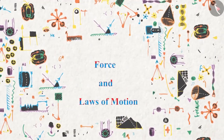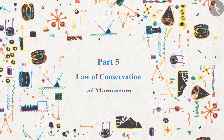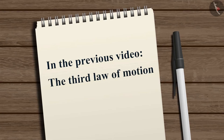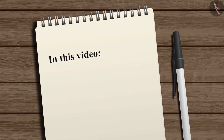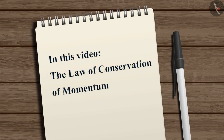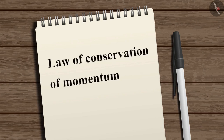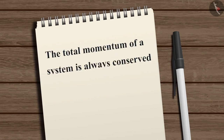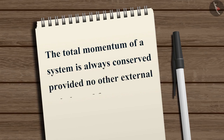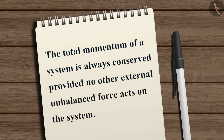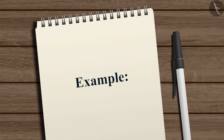Force and Laws of Motion Part 5: Law of Conservation of Momentum. In the previous video, we learned about the third law of motion. In this video, we will learn about the law of conservation of momentum. Just like any other conservation law of physics, the law of conservation of momentum tells us that the total momentum of a system is always conserved provided no other external unbalanced force acts on the system. Let us consider an example to understand this statement.